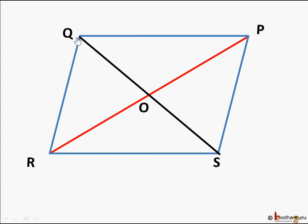We draw the other diagonal QS as well. The point O where both diagonals meet has an interesting property for the parallelogram: OQ is equal to OS, and OR is equal to OP.